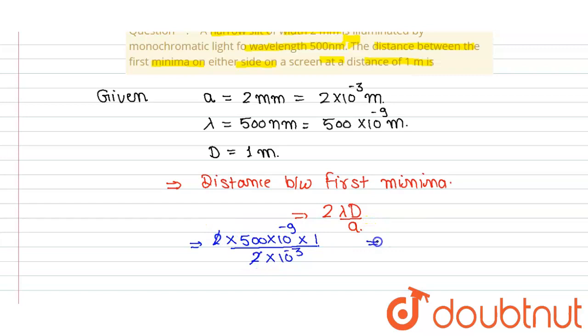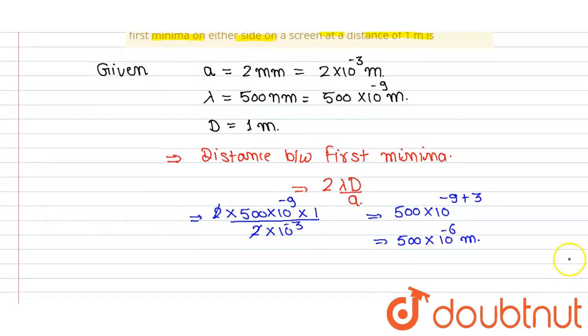Now it becomes 500 multiply by 10 to the power minus 9 and plus 3. So it becomes 500 multiply by 10 to the power minus 6 meter.